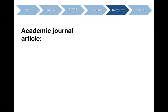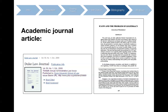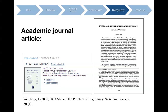Finally, journal articles. Start with the author's name and the year the article was published. Put in the title of the article, followed by the name of the journal in italics. Then indicate the volume and issue number — since many issues come out in a year — for example, volume 50, issue number one. And finally, include the page numbers of the article within the journal.